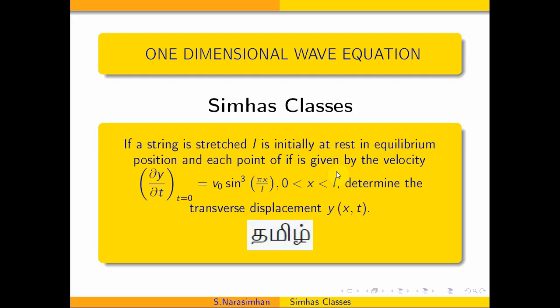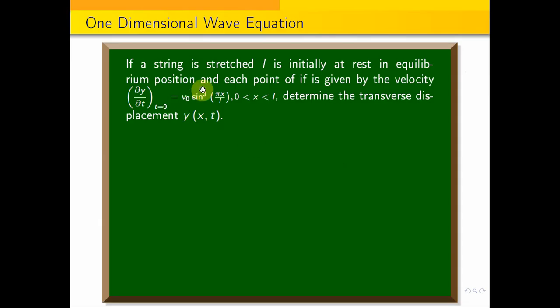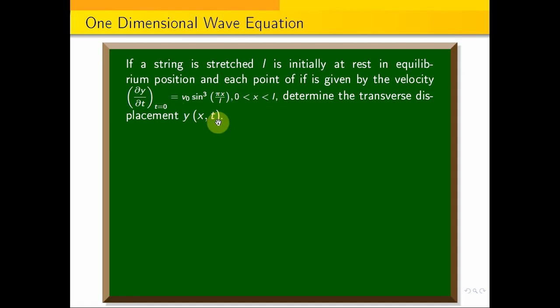If a string of length L is initially at rest in equilibrium position and each point of it is given the velocity ∂y/∂t at t=0 equal to v₀ sin³(πx/L), for 0 < x < L, determine the transverse displacement y(x, t).